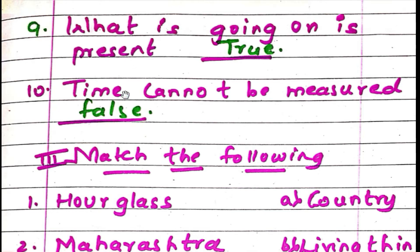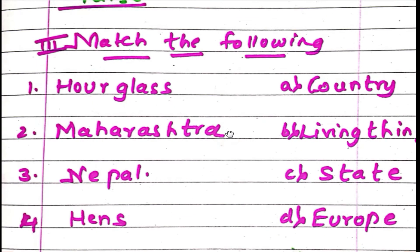Number six: the egret is black and the crow is white — obviously false. Number seven: the tailor bird is bigger than a sparrow — false, the tailor bird is smaller than a sparrow. Number eight: a magnetic needle in a compass always lies in the north and south direction — true. Number nine: what is going on is the present — true. Number ten: time cannot be measured — false, time can be measured.